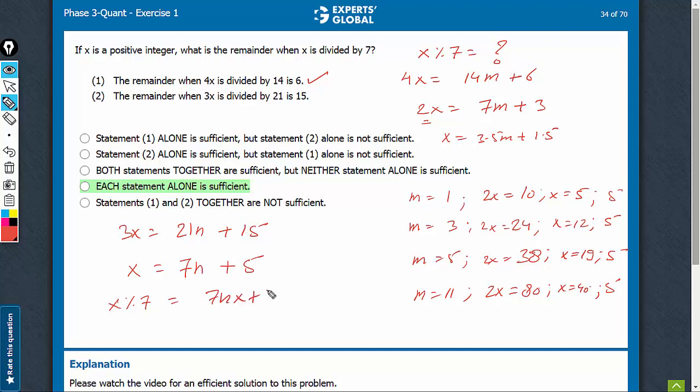7n will leave remainder 0, 5 will leave remainder 0, sorry, 5 will leave remainder 5. 0 plus 5, the remainder is 5.